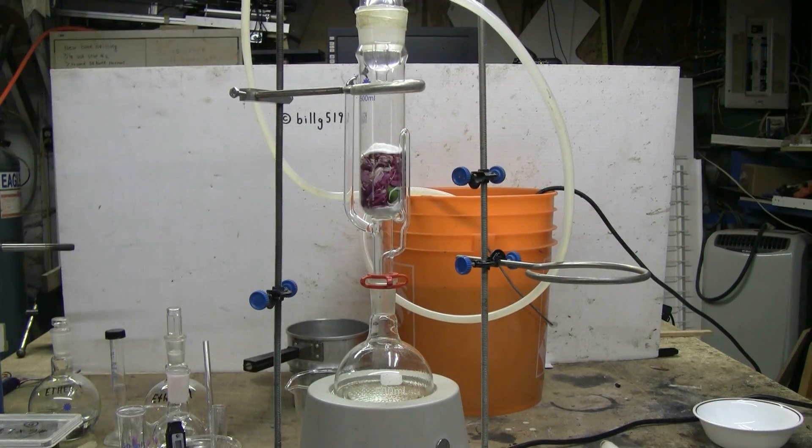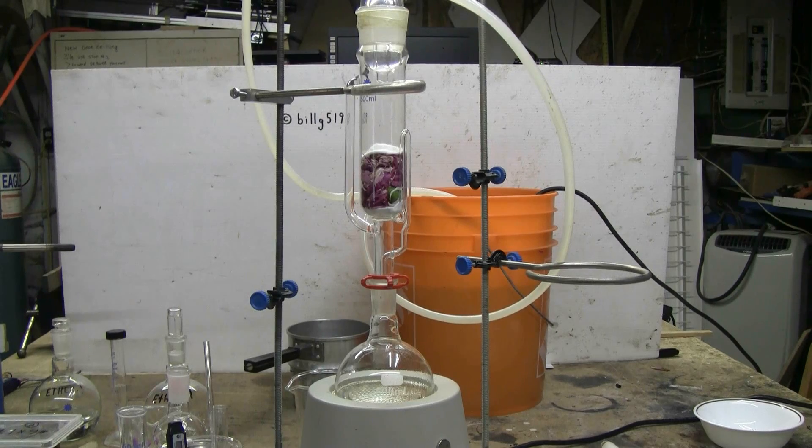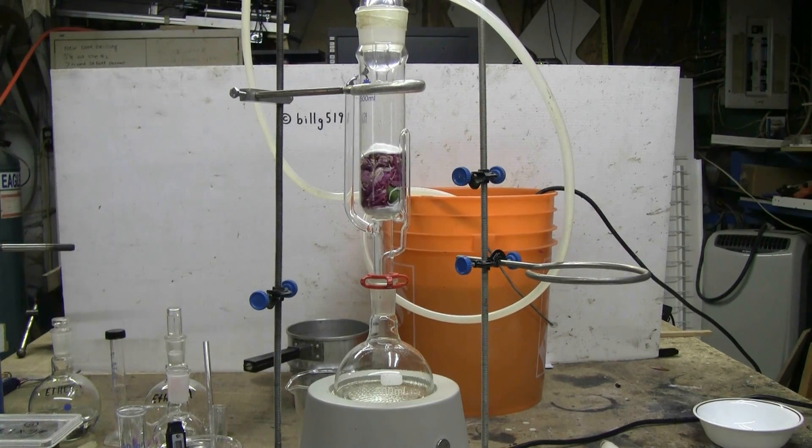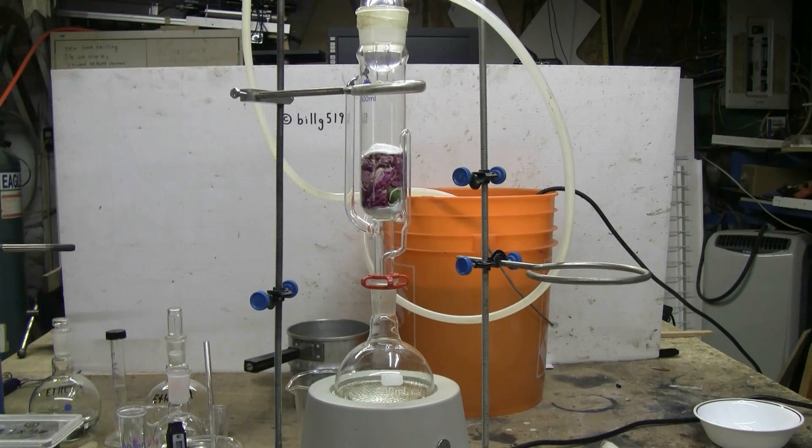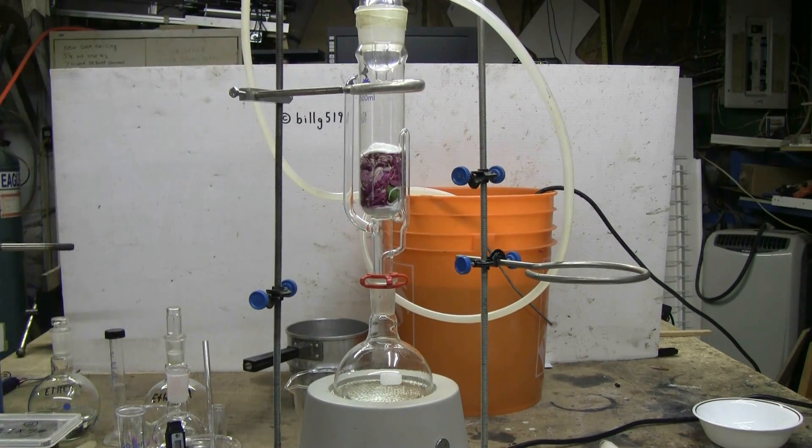I had more peony flowers left, so I've decided to do a second Soxhlet extraction to finish them off, but this time, instead of ether, I will be using ethyl alcohol, ethanol, as my solvent. So we'll give this a try and see what happens. The extraction with ether was colorless, but the extract did have the pleasant smell of the flowers. We'll see what happens with ethanol.